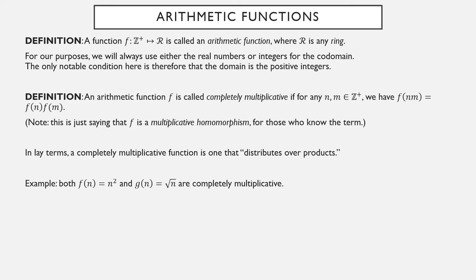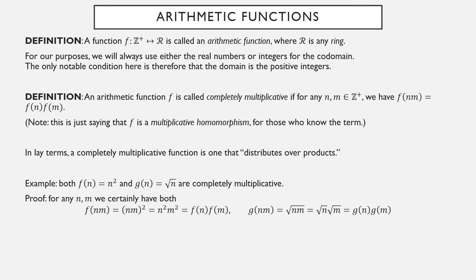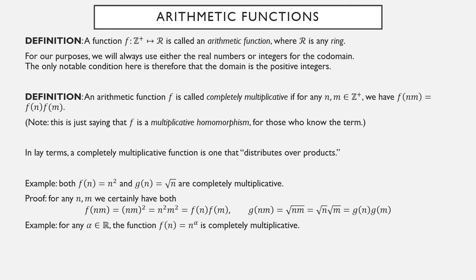Here's a quick example. Both of the following functions are completely multiplicative: n squared and root n. Pick any two positive integers n and m. Then f(nm) = (nm)² = n²m² = f(n)·f(m). Similarly, g(nm) = √(nm) = √n·√m = g(n)·g(m). In fact, for any real number α, the function f(n) = nᵅ is completely multiplicative, since powers distribute across products.